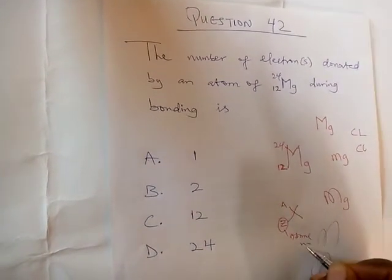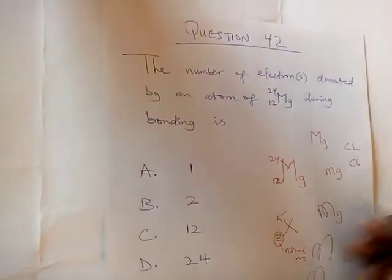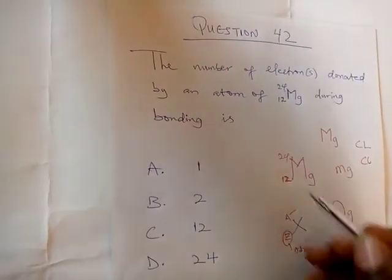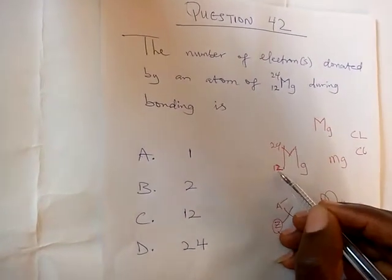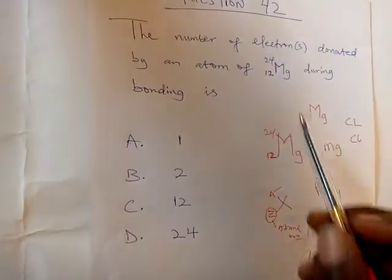This is called atomic number, the Z is atomic number, the A is atomic mass, what we call mass number. So same thing we have here. So this is magnesium, 12, on the periodic table.